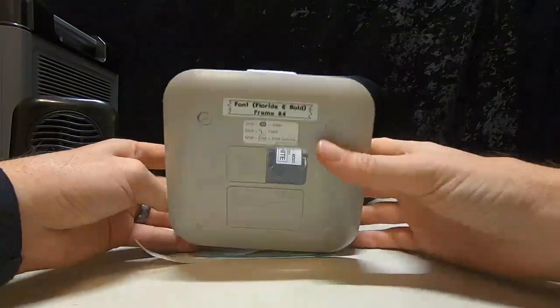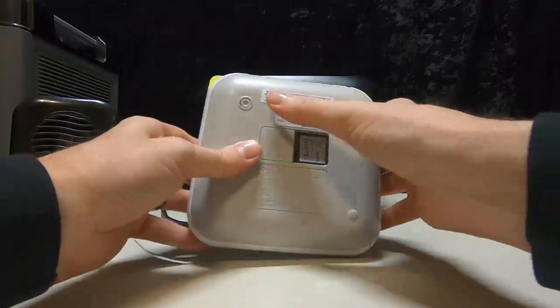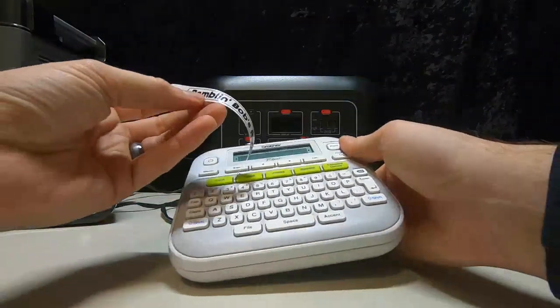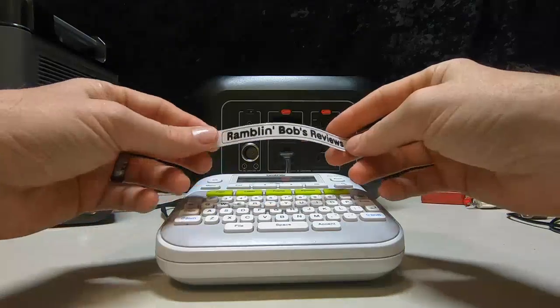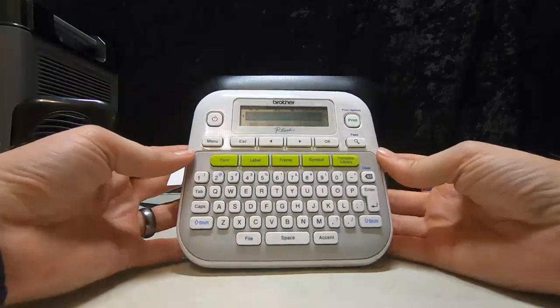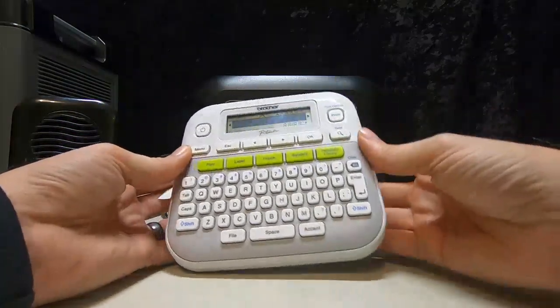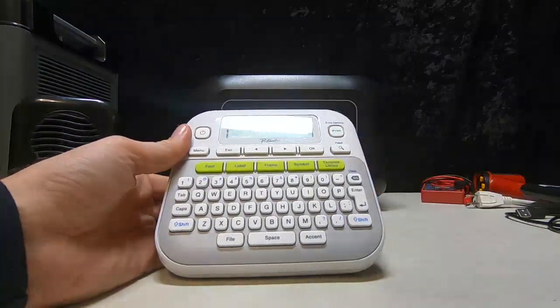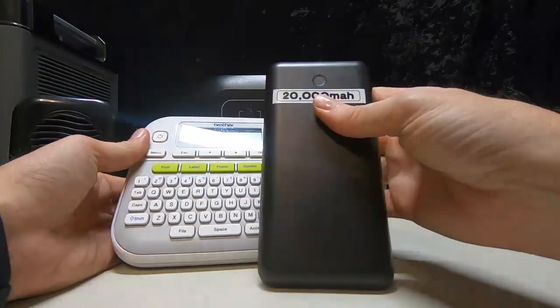And you can make all these neat little fonts, neat little things. There's pictures in there. Very cool. I think it was like 40 bucks. This is something I highly recommend if you have a lot of electronics and stuff and you're trying to keep track of what is what.